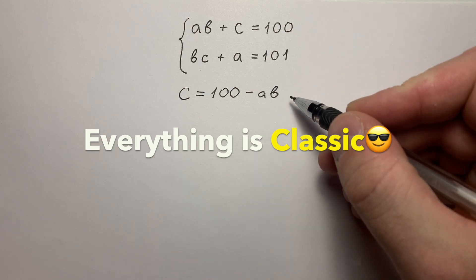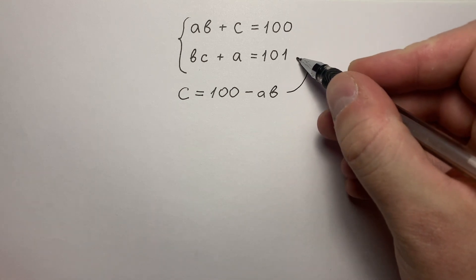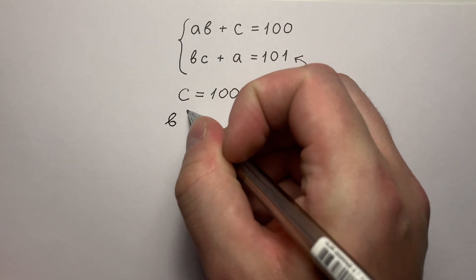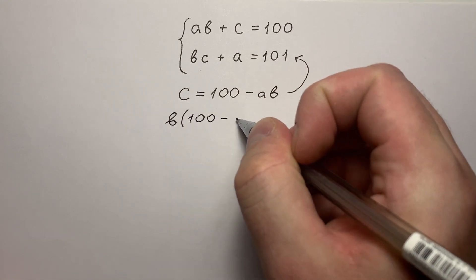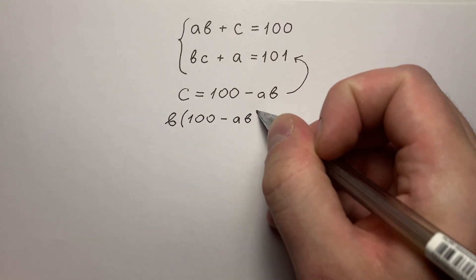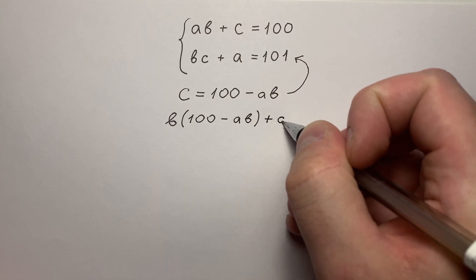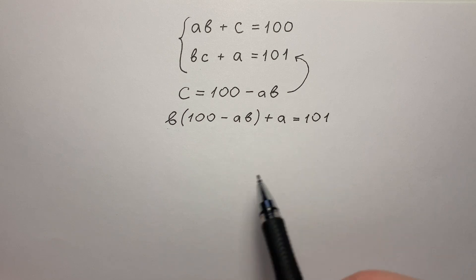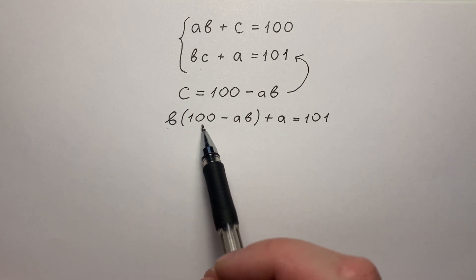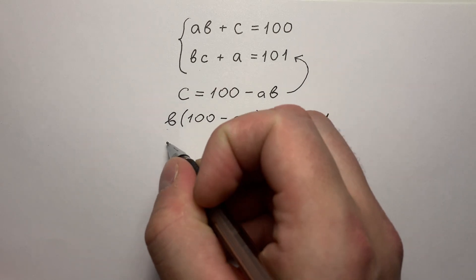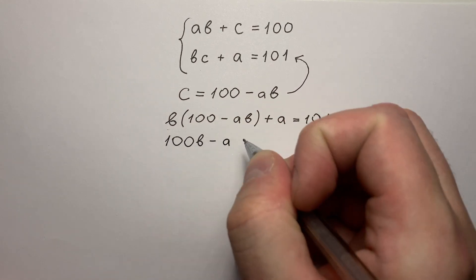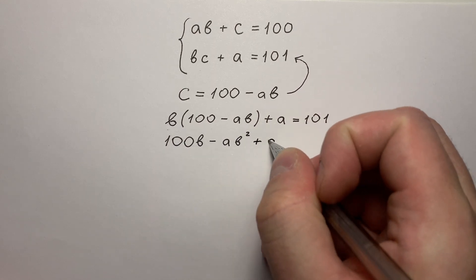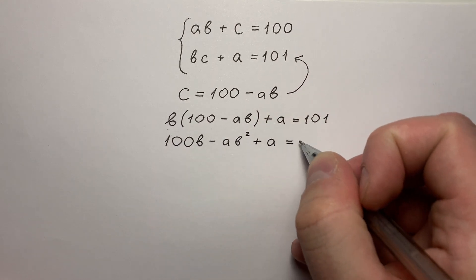Let's put this equation into the second equation of our system. So we have B times 100 minus AB plus A and it equals 101. Seems messy. Let's multiply B and 100 minus AB. We're going to have 100B minus AB squared plus A and it equals 101.